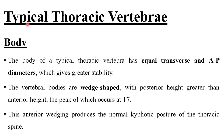Coming to the features of the typical thoracic vertebrae, the first feature is the body. The body has equal transverse and anteroposterior diameters, which gives greater stability to the thoracic region. The vertebral bodies are wedge-shaped with a posterior height greater than the anterior height, the peak of which occurs at the T7 vertebrae.